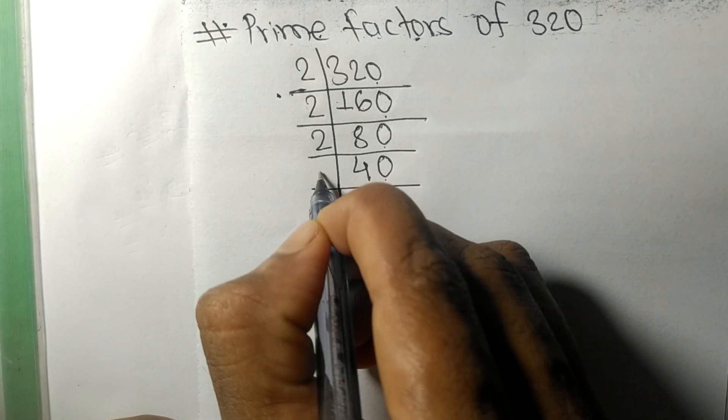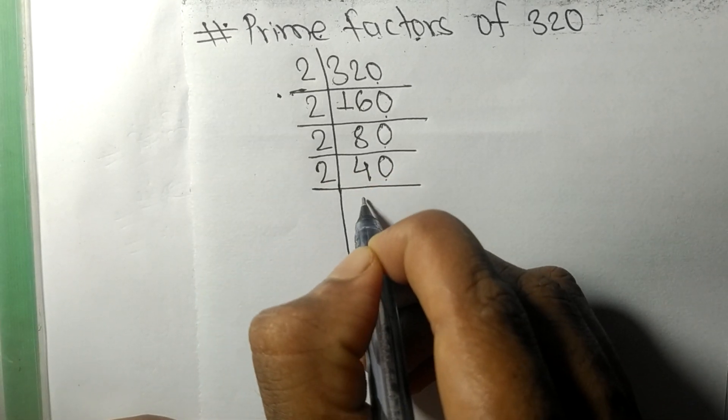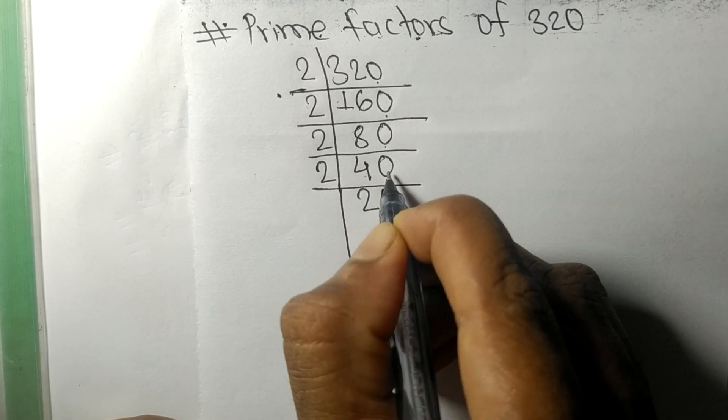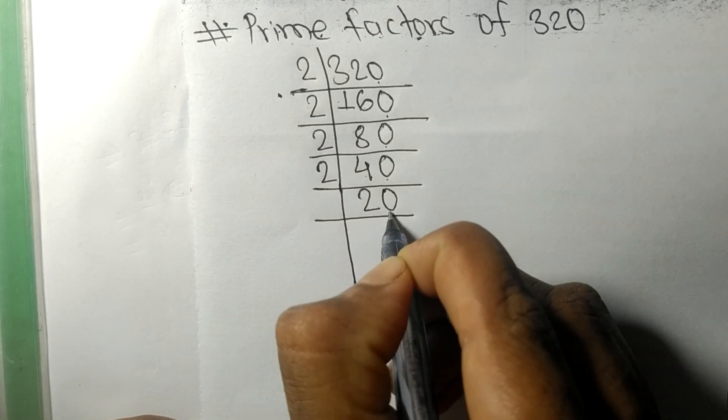2 times 2 is 4, 2 times 0 is 0. Again 0, so divisible by 2.